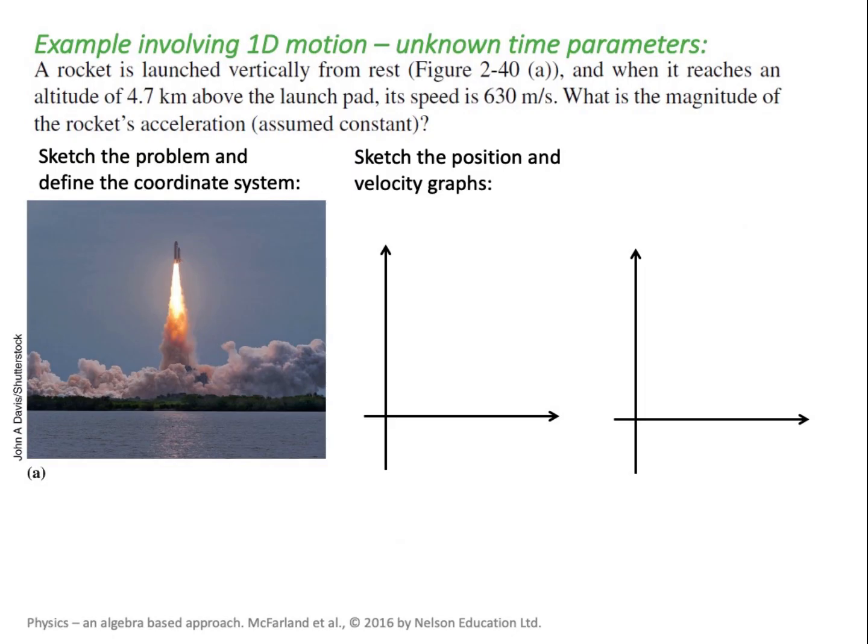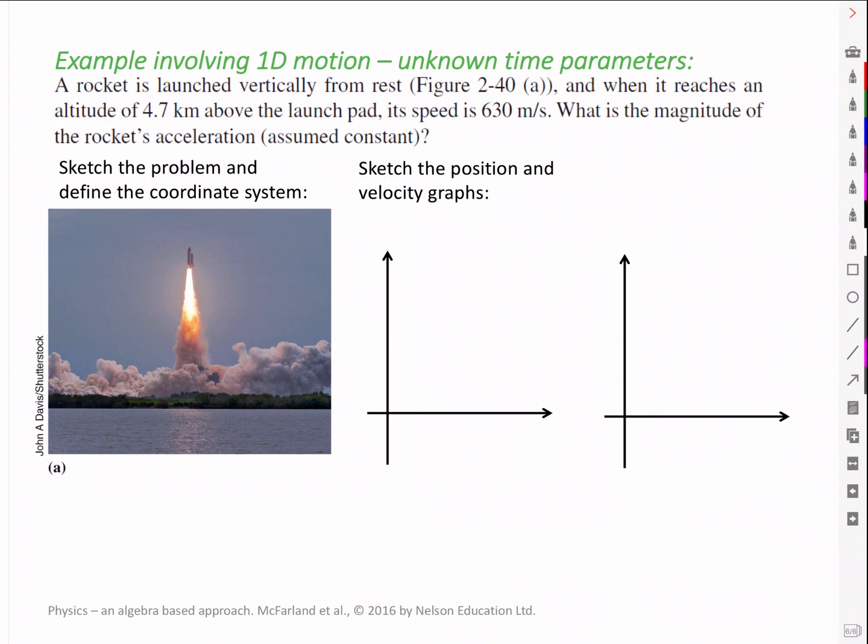Here's a simple example involving 1D motion where we've got unknown time parameters. A rocket is launched vertically from rest, as shown in the figure, and when it reaches an altitude of 4.7 km above the launch pad, its speed is 630 m per second. What is the magnitude of the rocket's acceleration, where it tells us we can assume that it's constant.